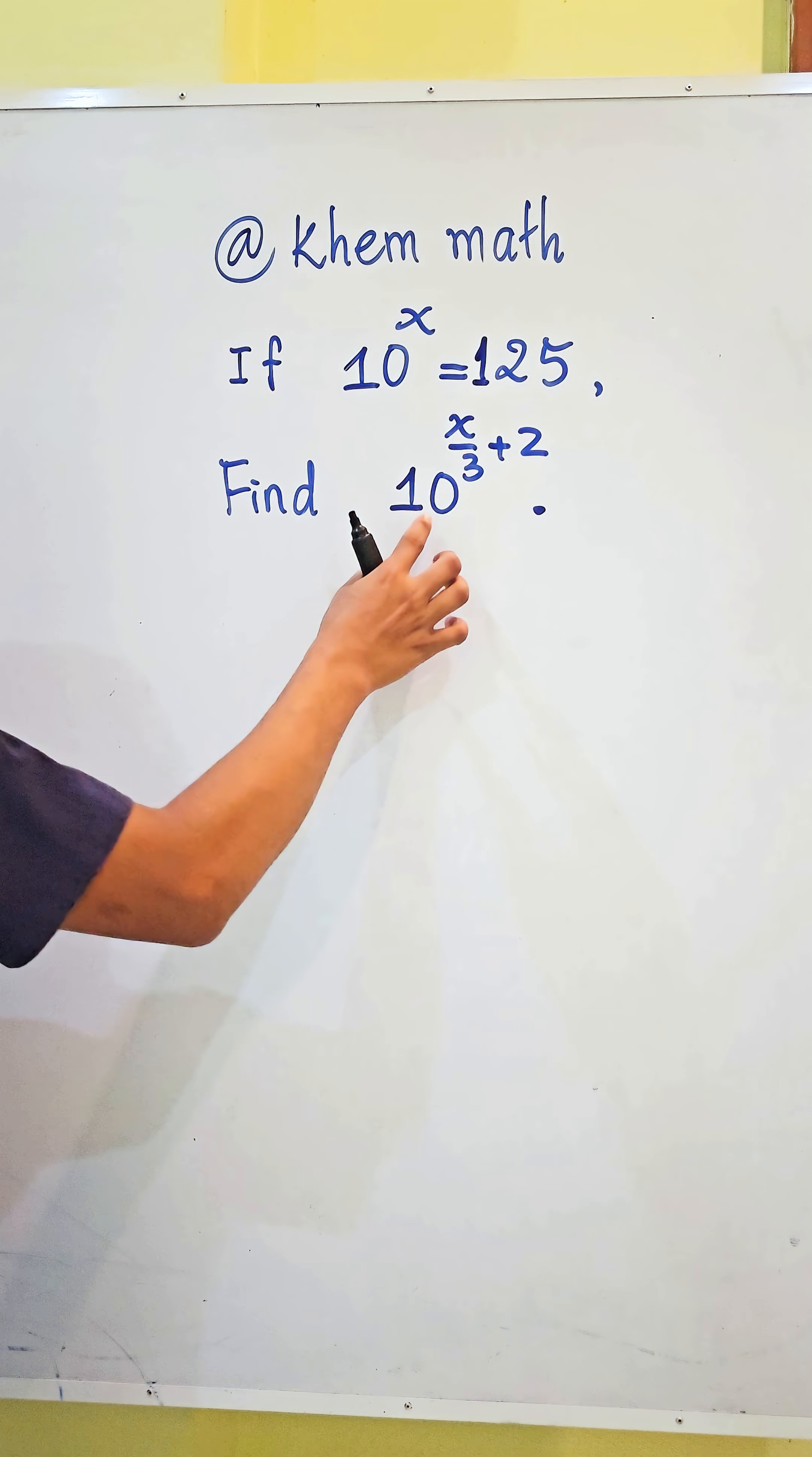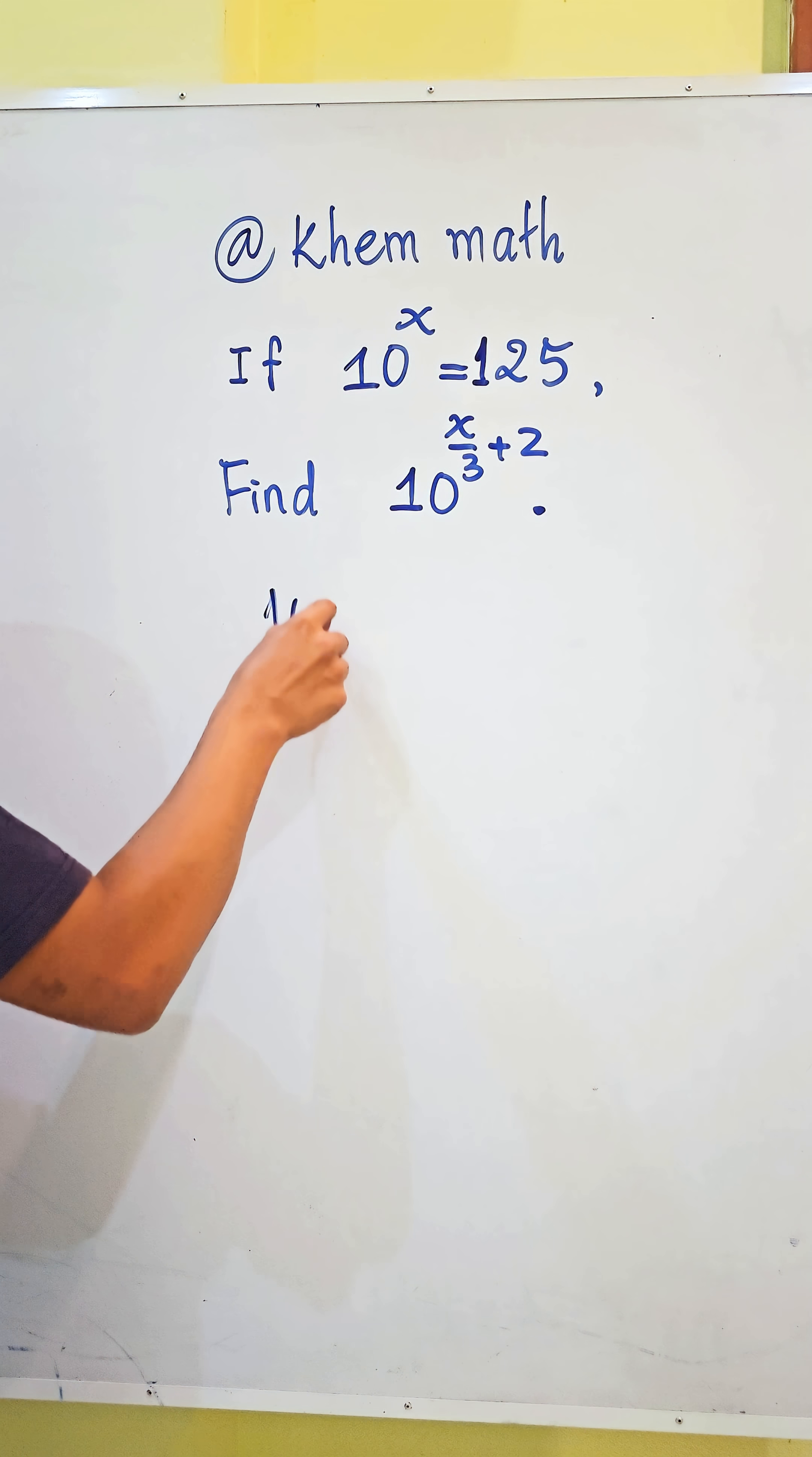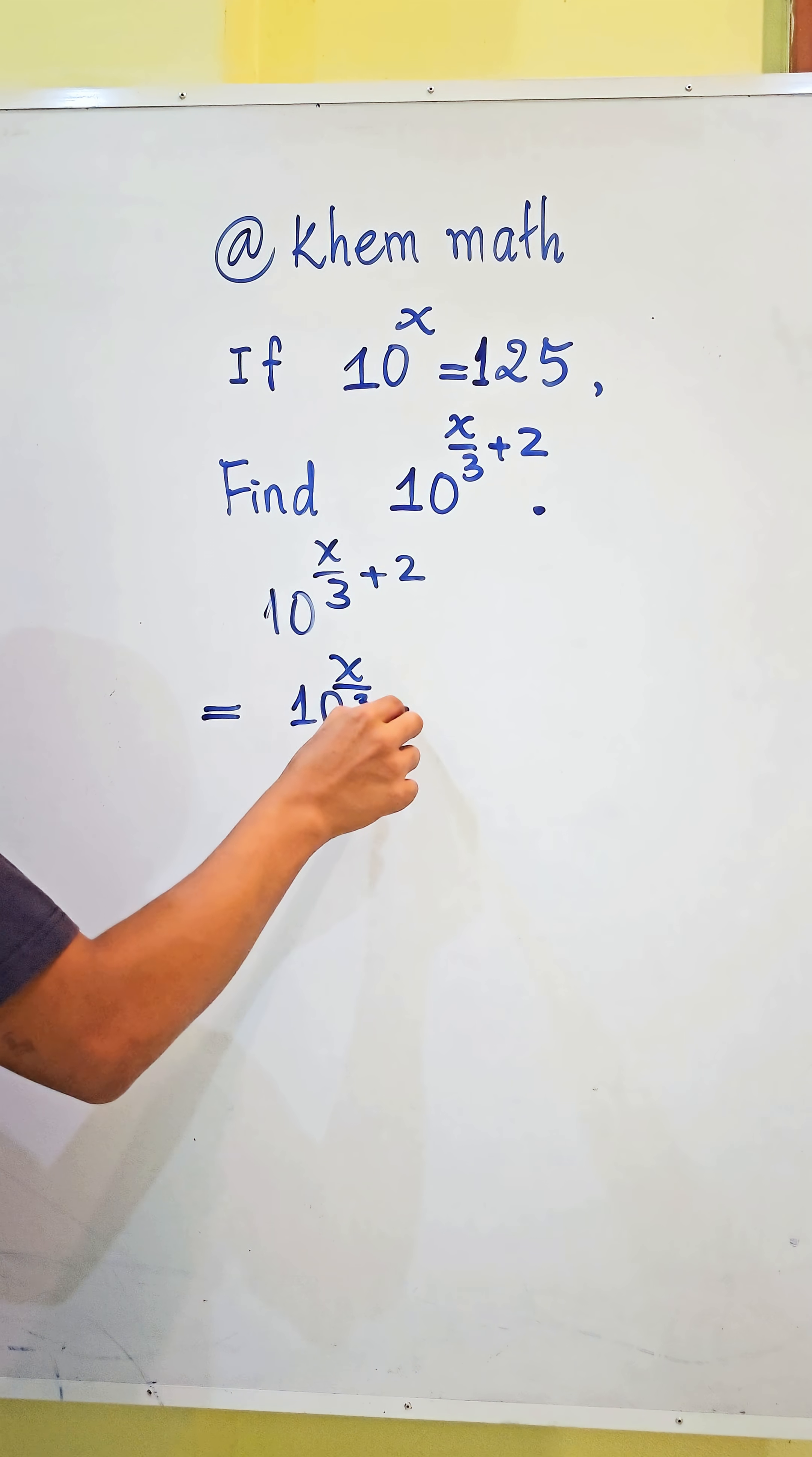Here, 10 power h divided by 3 plus 2, I can write it's equal to 10 power h divided by 3 times 10 squared.